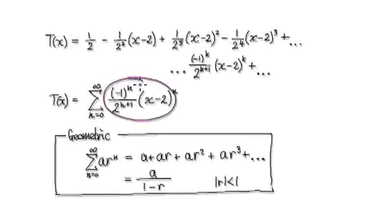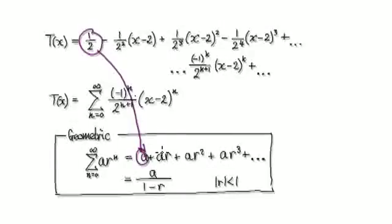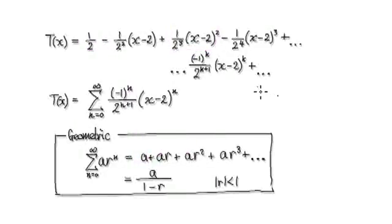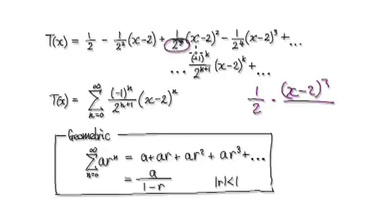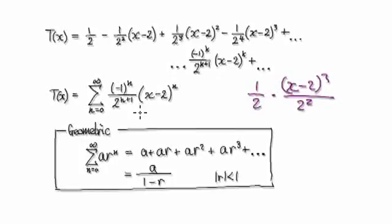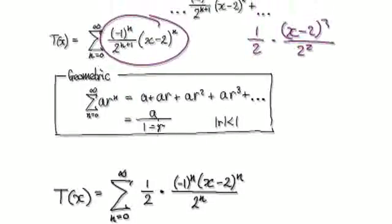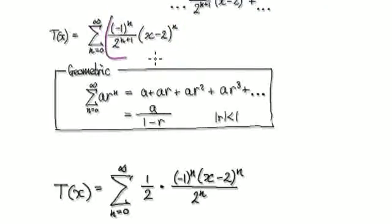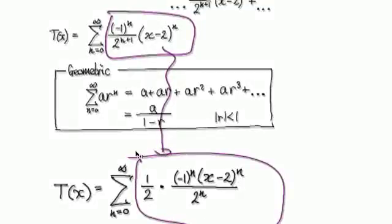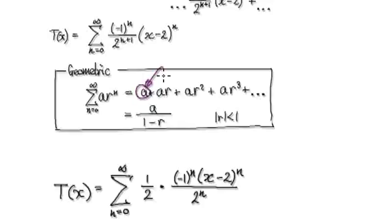Looking at this, it seems like this is our a here. We need to have this a at each step. That's why we rewrite it as 1 over 2 times x minus 2 squared, and then break the denominator up as 2 times 2 squared. So looking at this, we can break it up like this — and we know a is going to be one half.